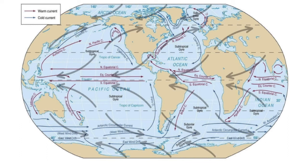As latitude rises to high latitudes, warm currents are generally on the eastern side of the continents and cold currents are on the western side of the ocean.